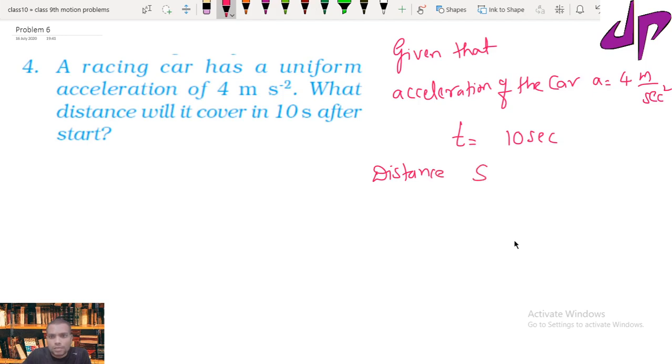Distance means s equal to how much. And if you can see, before starting what is the initial velocity of the car? So initially the car will be at rest, so initial velocity we will take as 0.